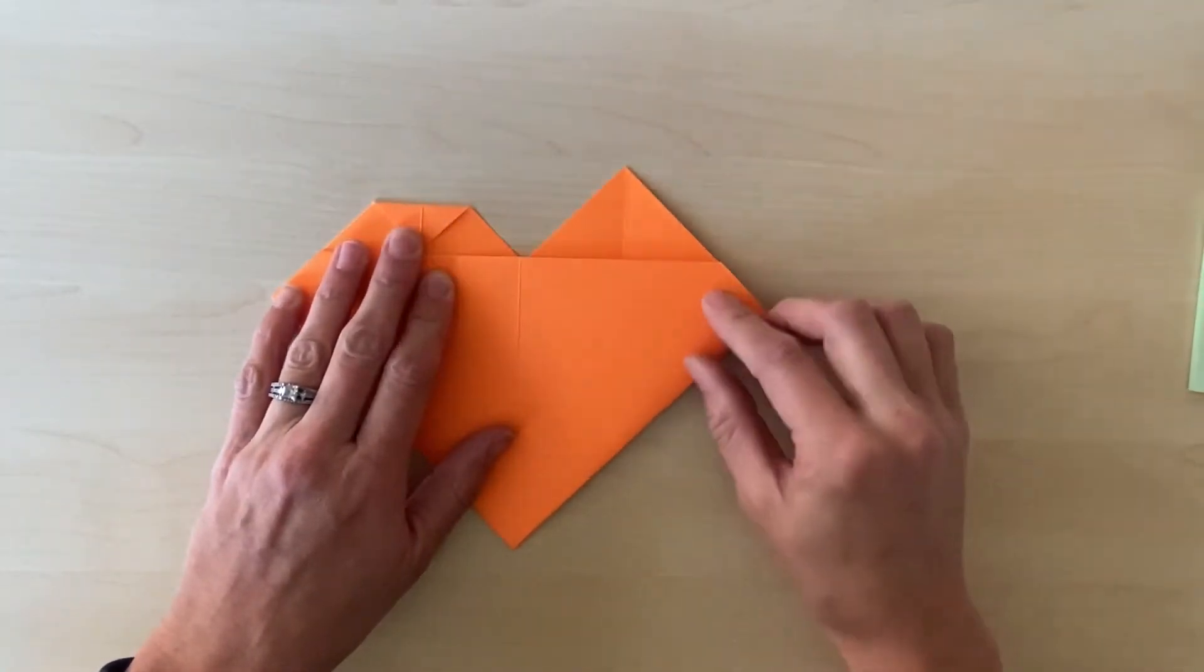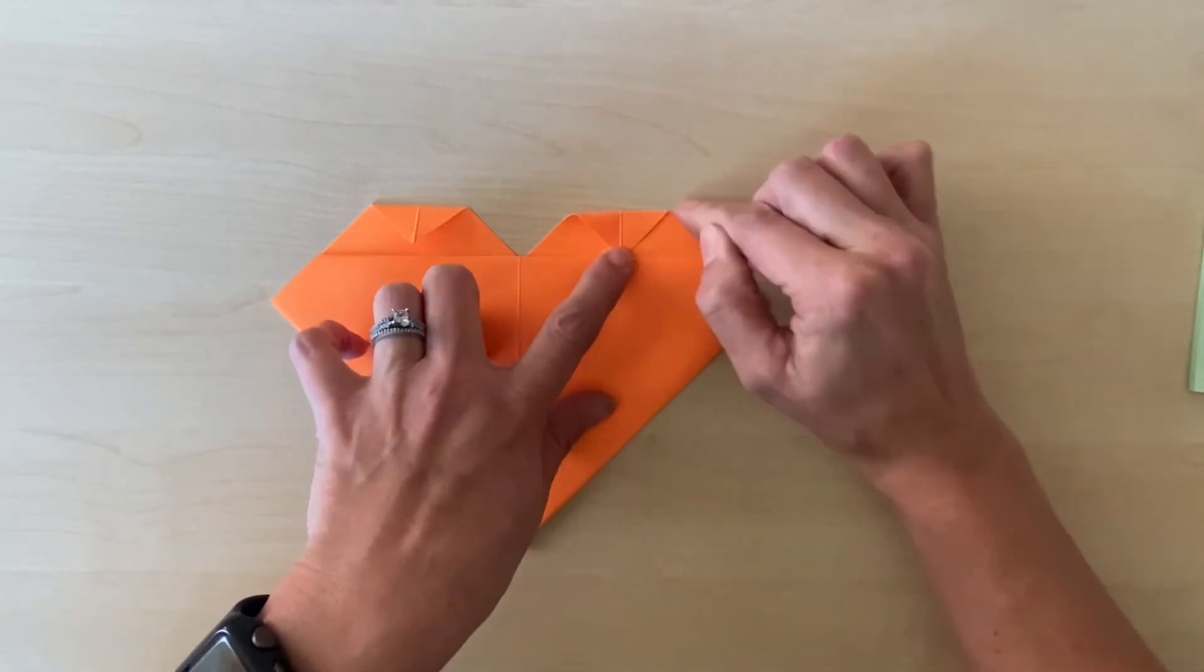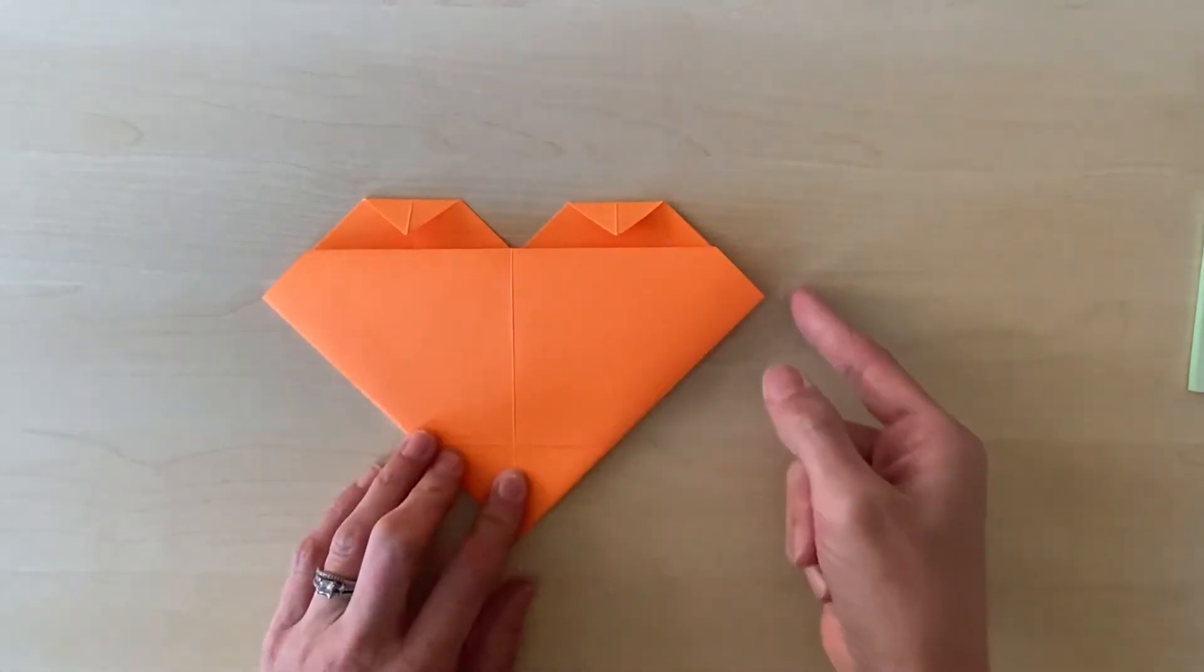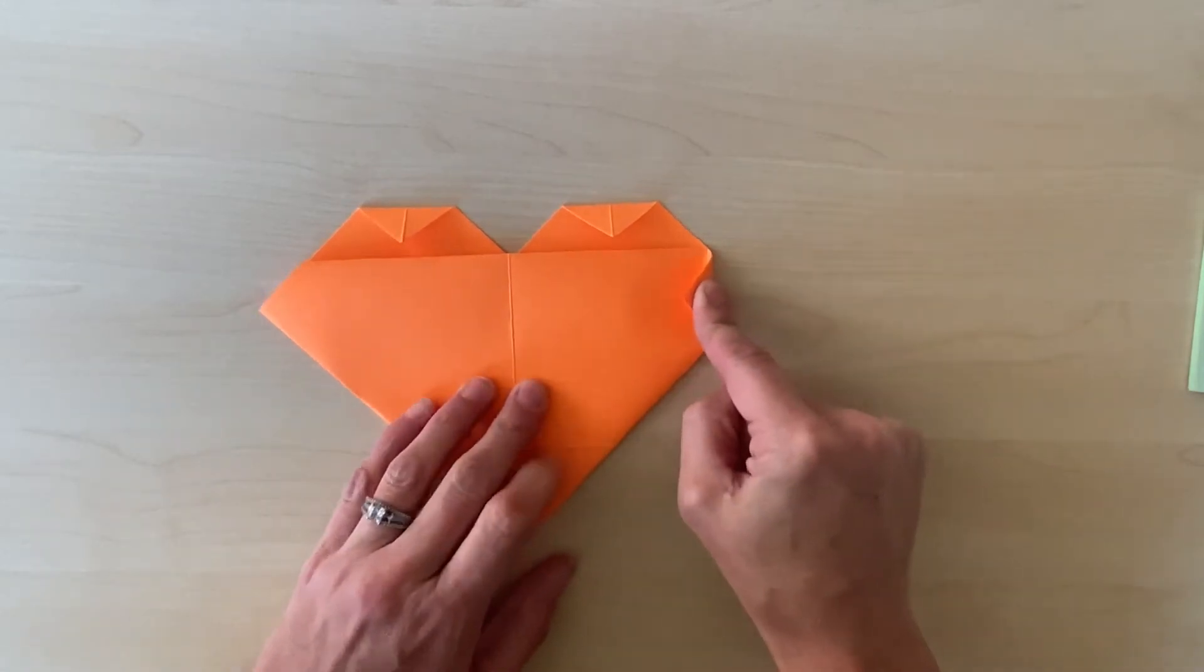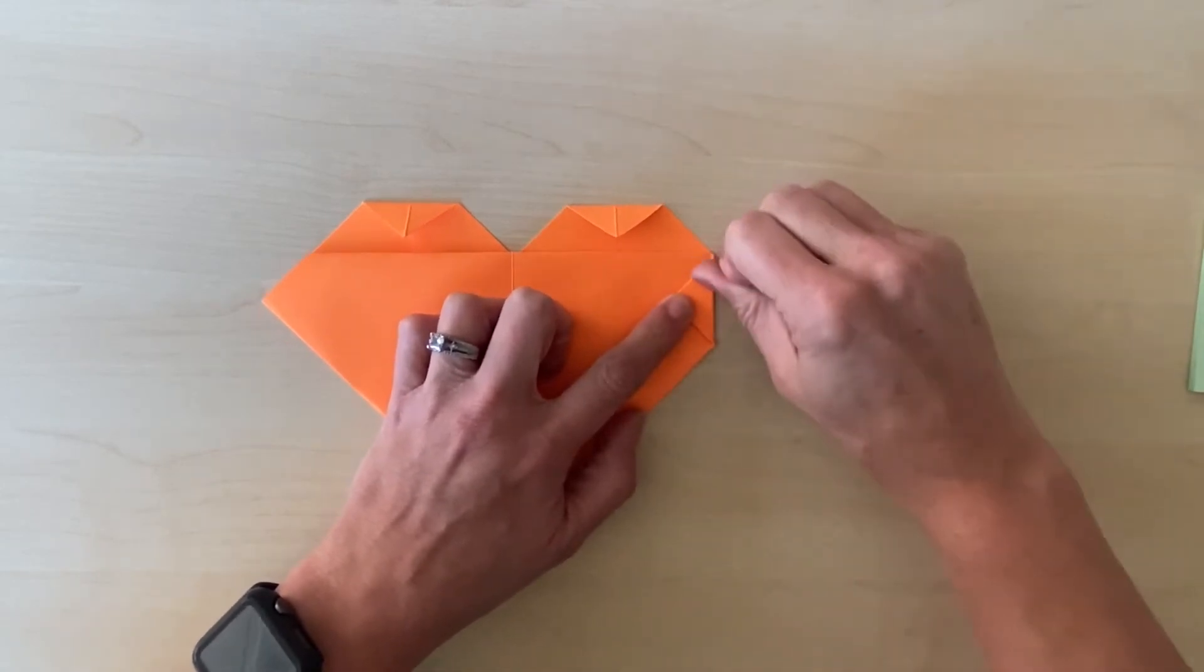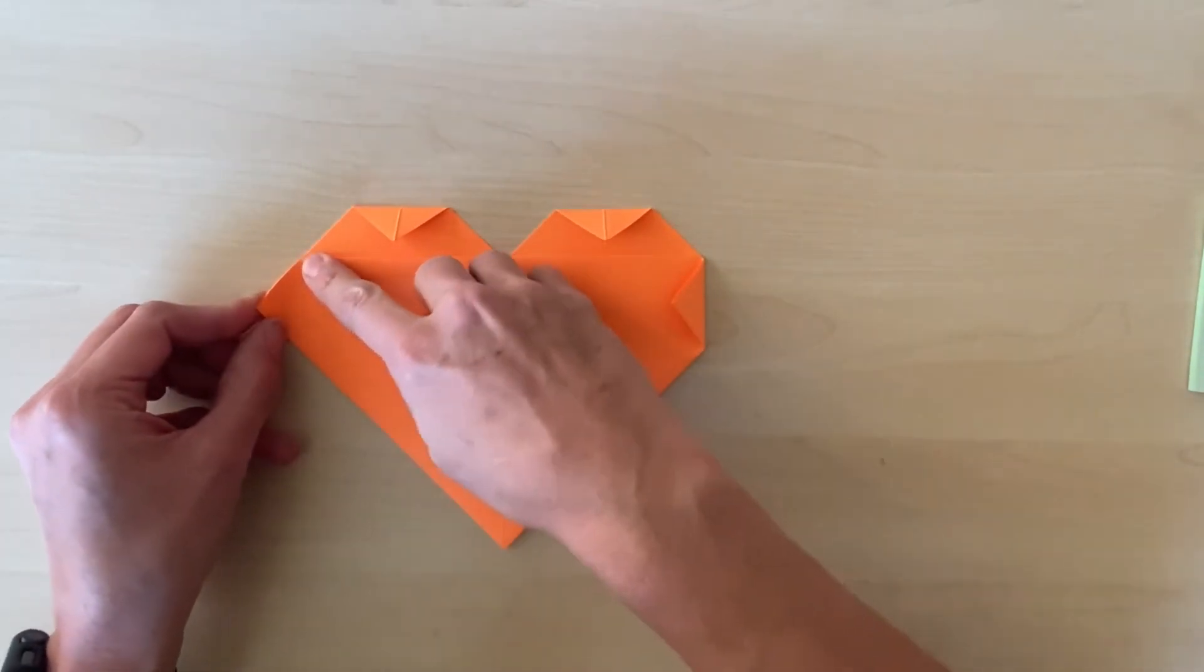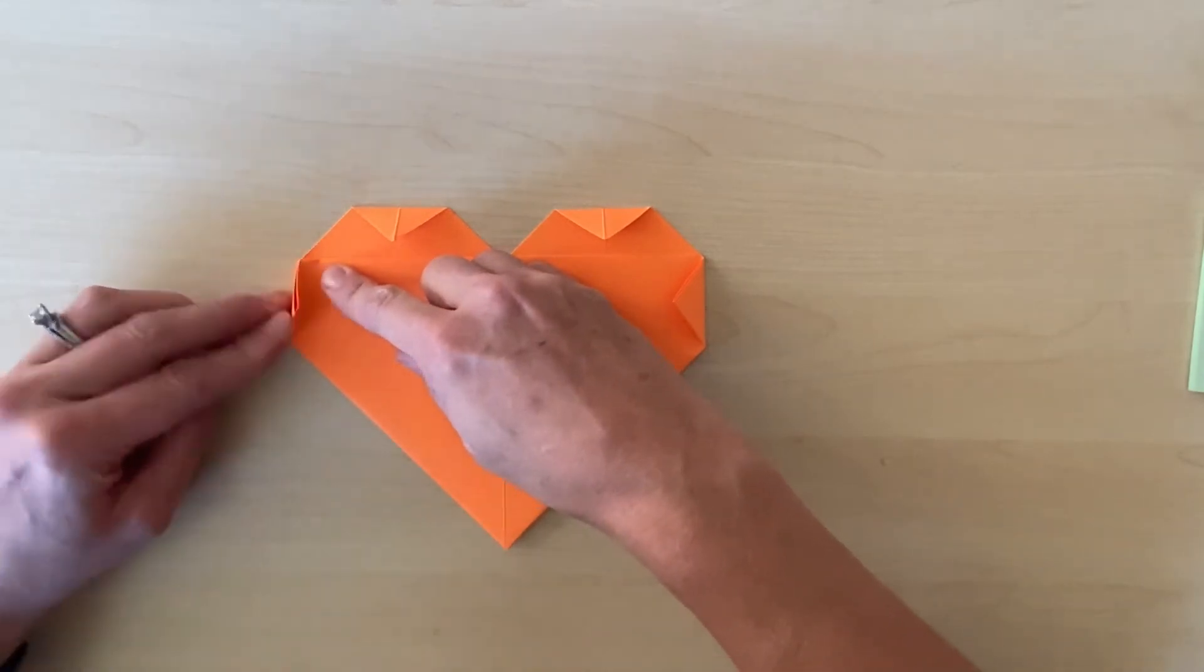After that I'm going to do a lateral fold. I'm going to take my point and line it up with this edge and make a tiny triangle fold, using this point right here where this fold meets and folding it over.